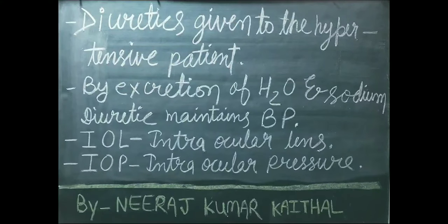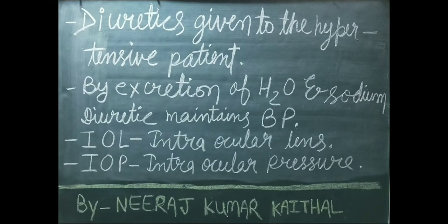Diuretics are given to hypertensive patients by excretion of water and sodium — diuretics maintain BP. Hypertension ke marizon ko diuretic drugs di jaati hain. Diuretics hamare sharir mein urine ki matra ko badhati hain. Urine ki matra badhne par water aur sodium sharir se bahar nikal jaate hain aur patient ka BP bhi kam ho jaata hai. IOL ka full form hai Intraocular Lens. IOP ka full form hai Intraocular Pressure.